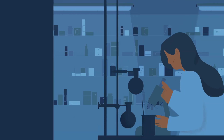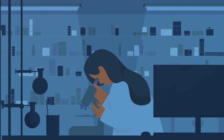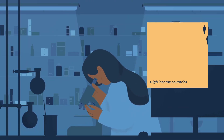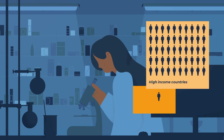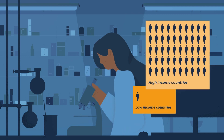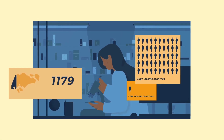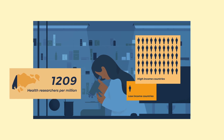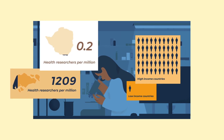Did you know that high-income countries average 50 times more health researchers than low-income countries? This ranges from 1,209 health researchers per million to just 0.2 across countries.